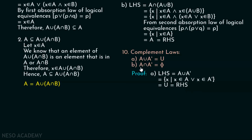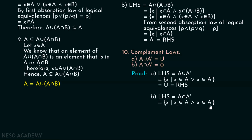Now let us prove the second law: A intersection A complement is equal to phi. The LHS is A intersection A complement, which can be written as the set of all X such that X belongs to A and X belongs to A complement. This is not possible — X cannot belong to A and A complement at the same time. Therefore, this set is nothing but phi, the empty set. Hence, A intersection A complement is equal to phi.